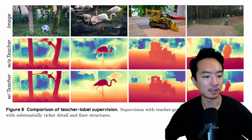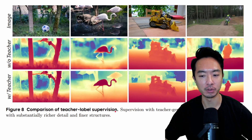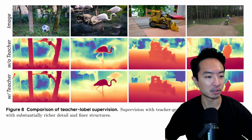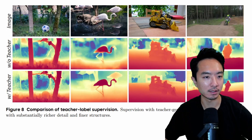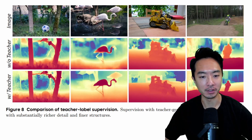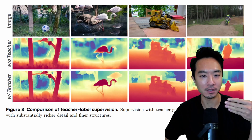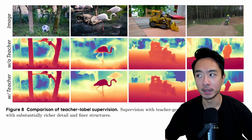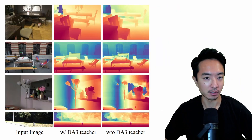Here is some comparison of the teacher label supervision. Up on the top is the image, the middle is without the teacher, and the bottom is with the teacher. What you notice is the level of detail in areas like the tree and the bird — you can see the clear separation between the foreground and background. These are some really nice results.